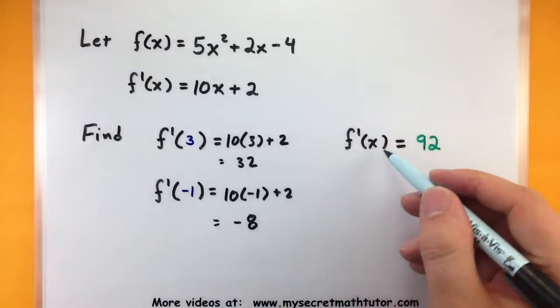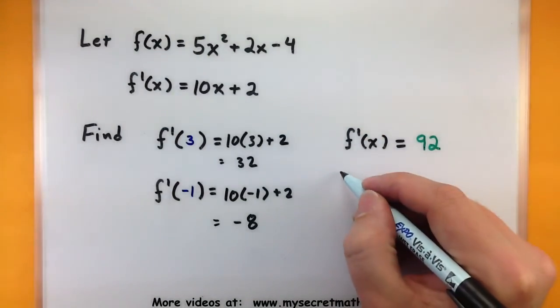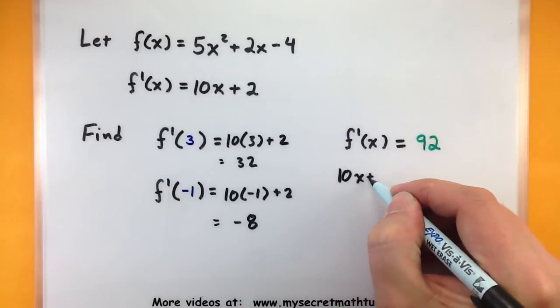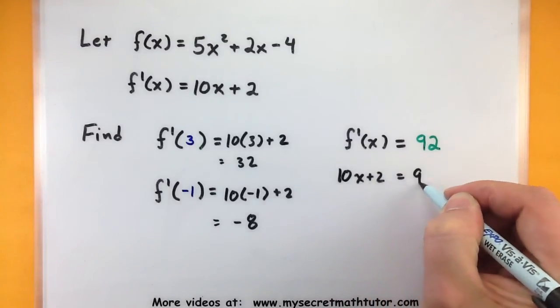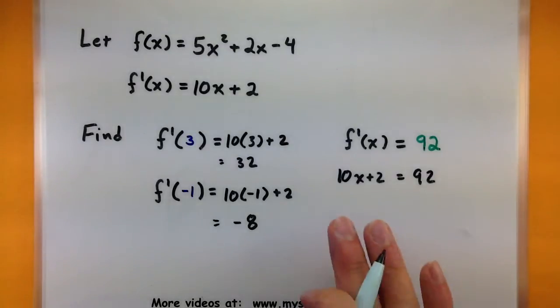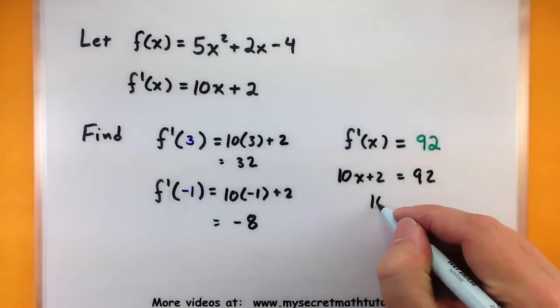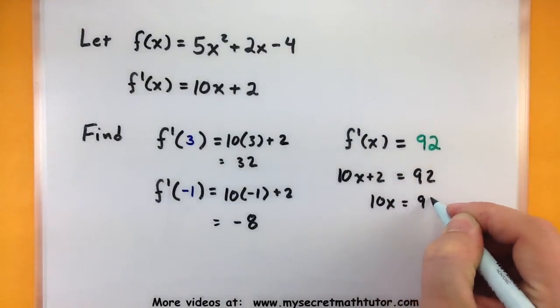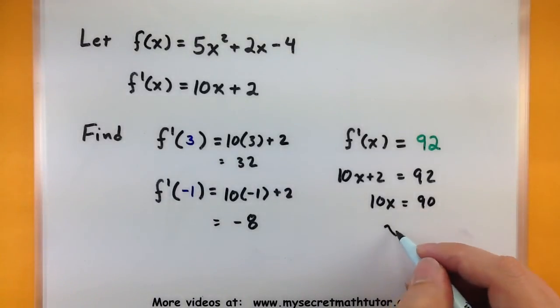So for this one, I'll replace all of f prime of x with the function that represents it. So I want to know where does this thing equal 92. So I could subtract 2 from both sides, get a 90, then divide by 10,